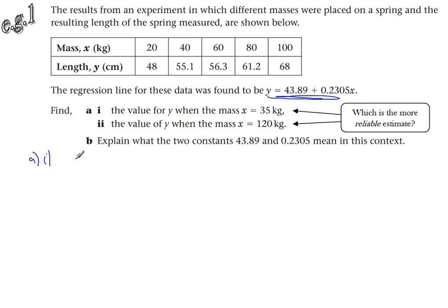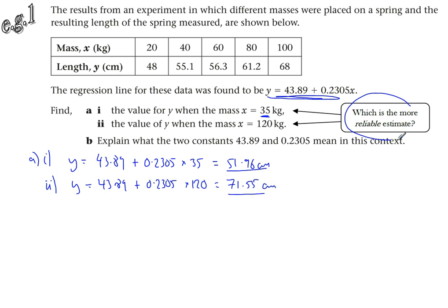This linear regression line effectively becomes a formula. So part A, simply use that formula. Y is 43.89 plus 0.2305 times X, which in this case is 35. It comes to 51.96 centimetres. That's our prediction for the length of the spring with a mass of 35 kilograms. Do the same thing now for 120 kilograms: 43.89 plus 0.2305 times 120, which comes to 71.55 centimetres.